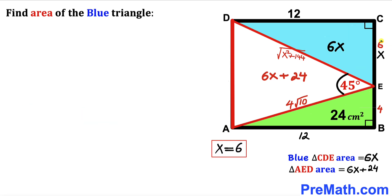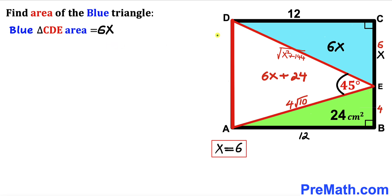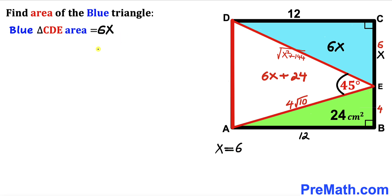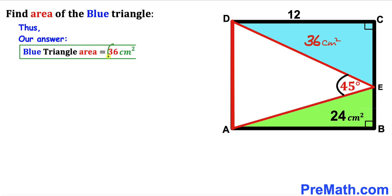We know the area of the blue triangle is 6X, and X = 6, so substituting gives 6 × 6 = 36. Thus the area of the blue triangle CDE is 36 centimeters squared. Thanks for watching — please subscribe to the channel for more exciting videos!